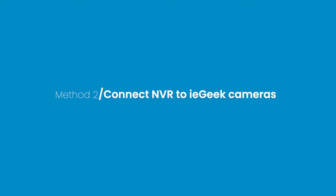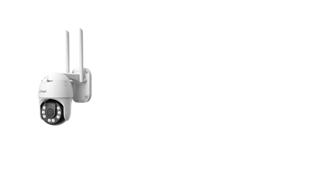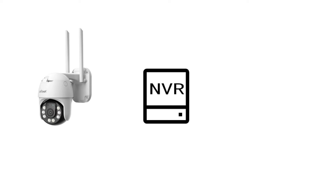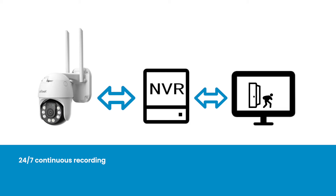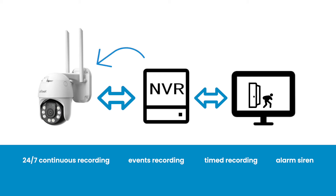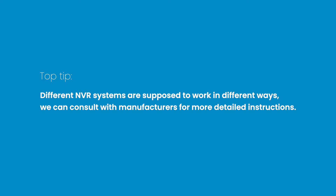Method 2: Connect NVR to IE Geek Cameras. This method is applied to all IE Geek Security Cameras. An NVR, or Network Video Recorder, is a specialized computer system that records camera footage on a hard drive. After you add IE Geek Security Cameras to the NVR, just hook the NVR up to a television to watch the live feeds. Additionally, you can get access to 24/7 continuous recording, events recording, timed recording, and alarm siren — although it doesn't support alarm push notifications without Wi-Fi. You can set the NVR to make siren sounds once the camera detects any suspicious events. Top Tip: Different NVR systems work in different ways; consult manufacturers for more detailed instructions.